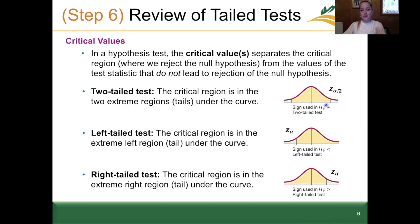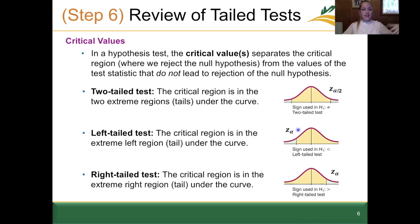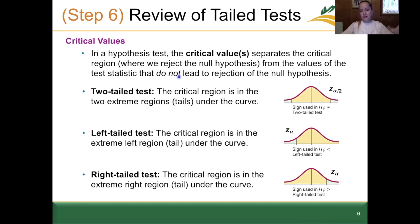For a left-tailed or right-tailed test, rather than z-alpha over 2, we denote the critical value as simply z-alpha. The area in green is always alpha — for a two-tailed test, alpha over 2 is on each side, so the critical value is z-alpha over 2. For a left-tailed or right-tailed test, alpha is the entire area in one tail, so the critical value is denoted z-alpha. Connecting this to our hypothesis test: the critical value separates the critical region where we reject the null hypothesis from values that do not lead to rejection.